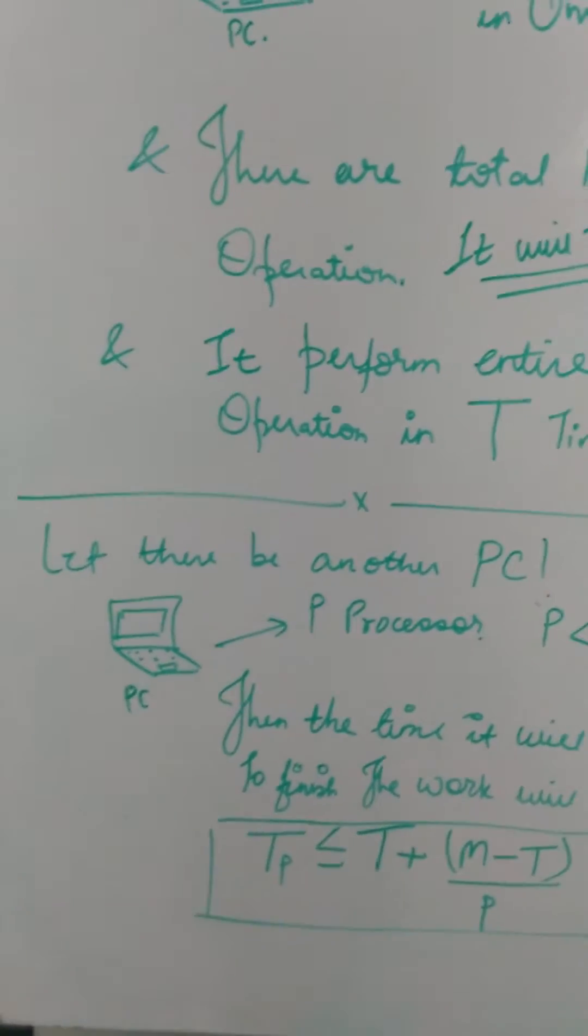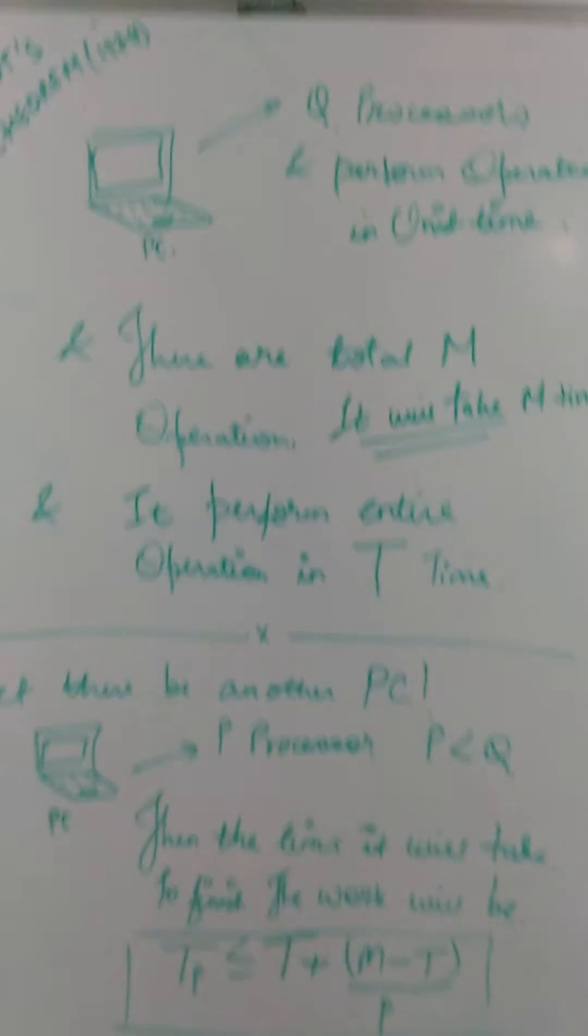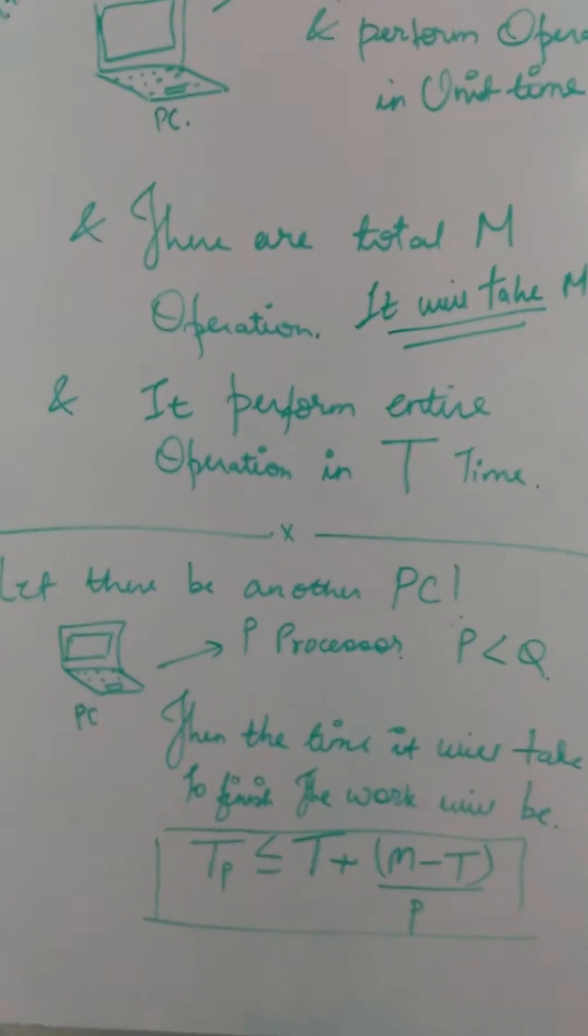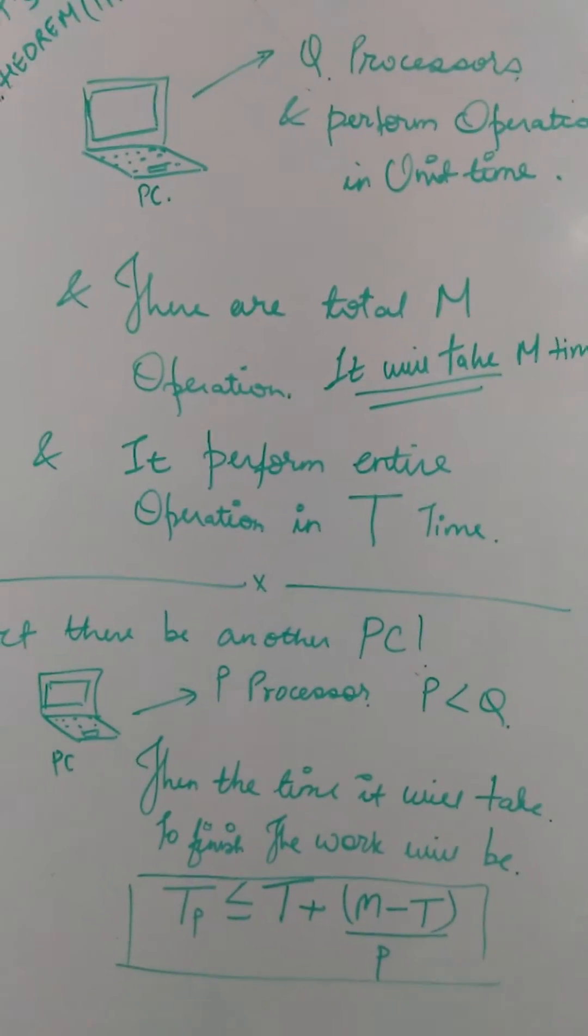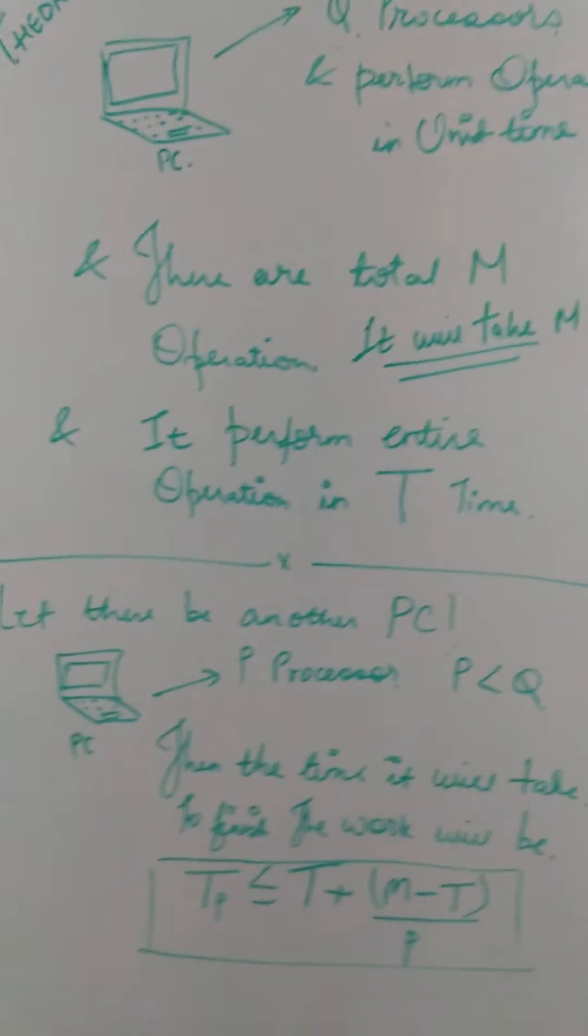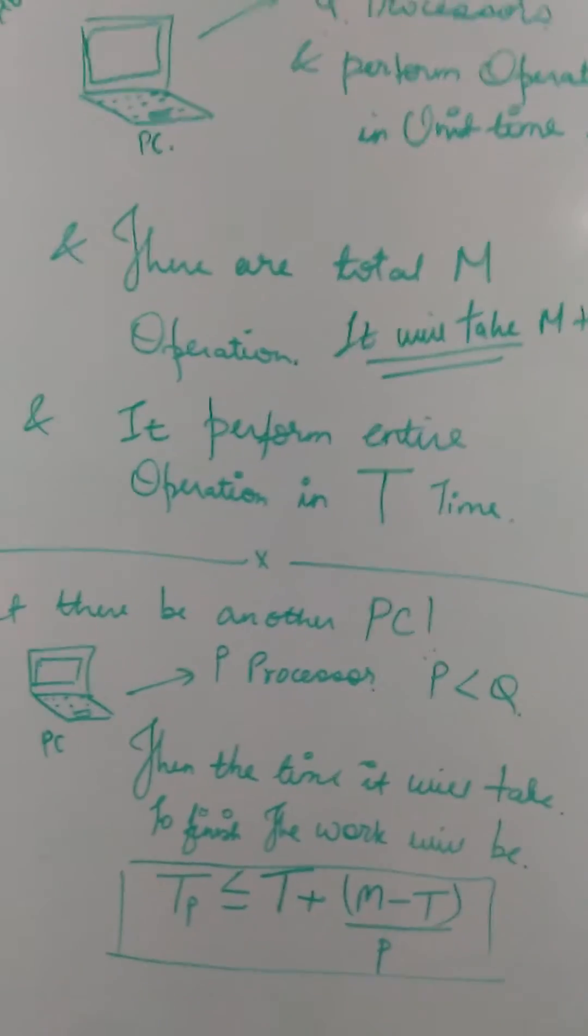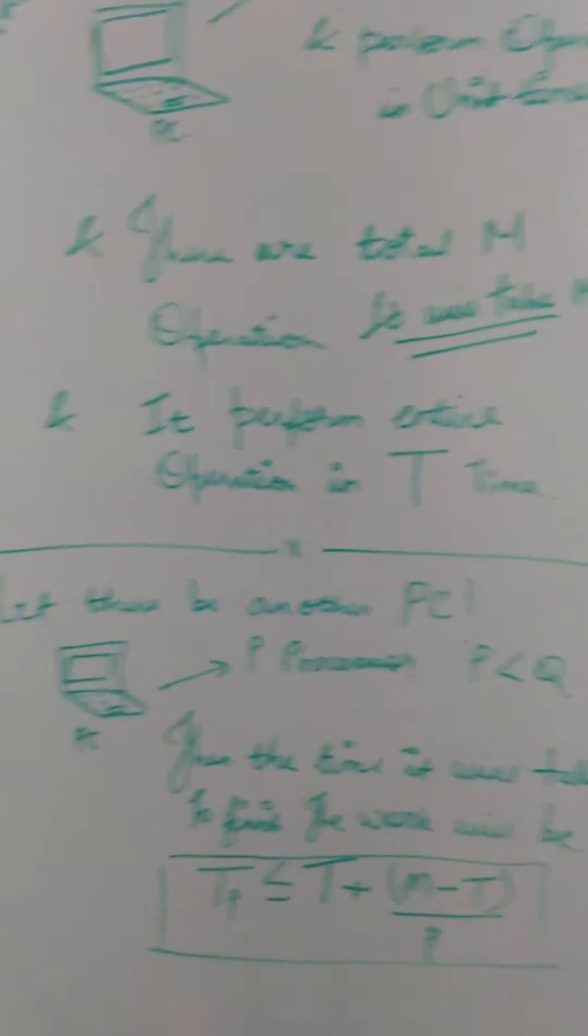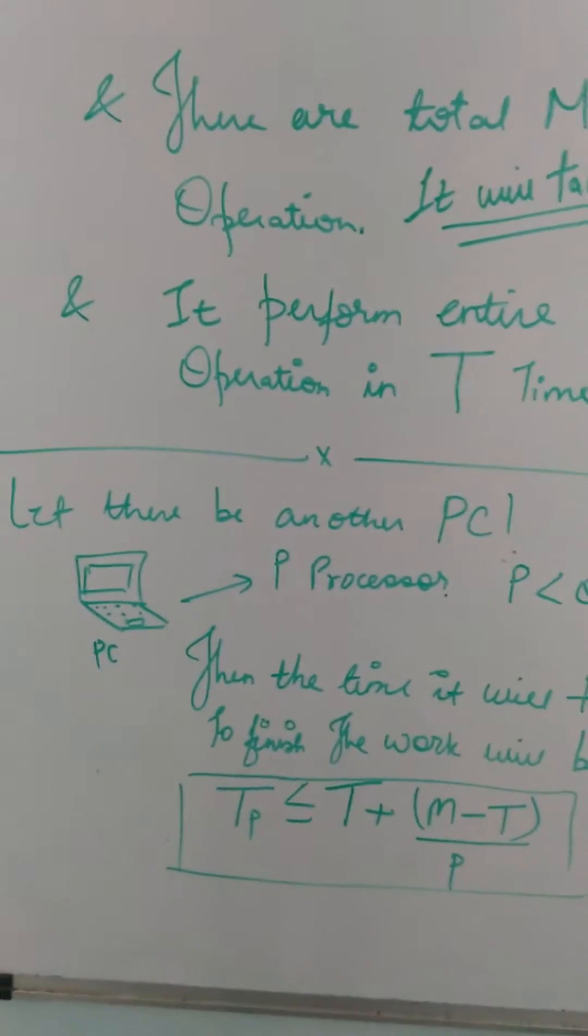This PC has fewer processors than the earlier PC. So we know the earlier PC had the maximum processors which can achieve maximum concurrency, and now we have another PC which has fewer processors.